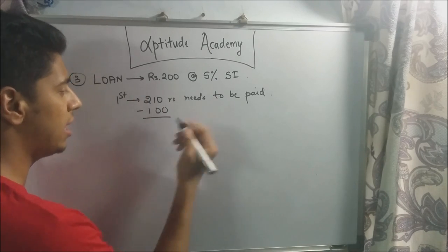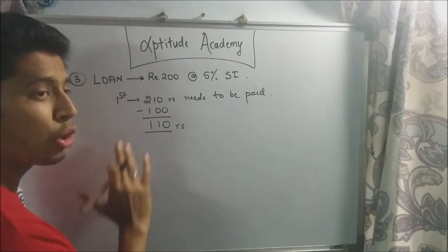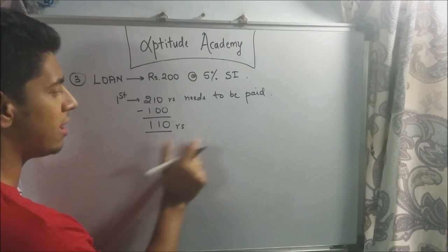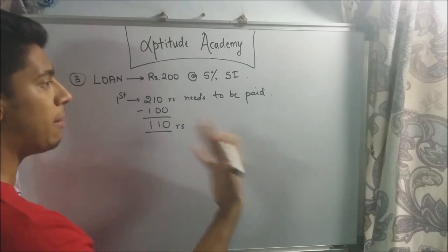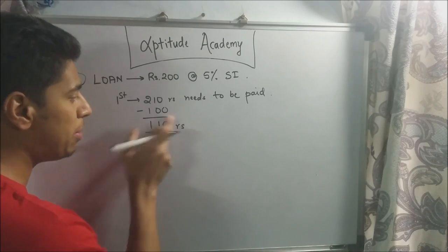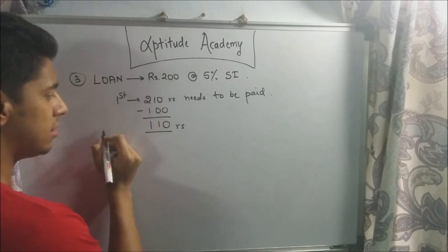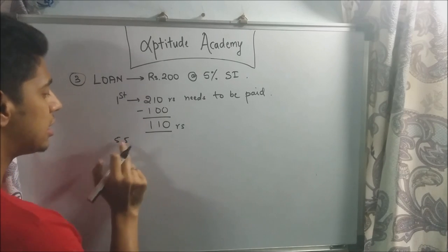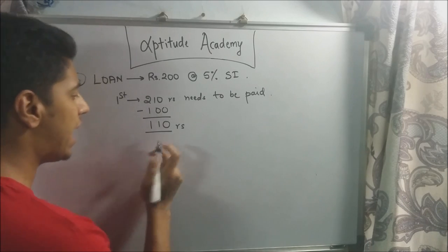I'm not using any formula here — doing it mentally for speed in competitive exams. He owes 110 rupees at the end of year one. At the end of two years, this 110 becomes the new principal. Five percent of 110: 10 percent is 11, so 5 percent is 5.5 rupees interest added on.